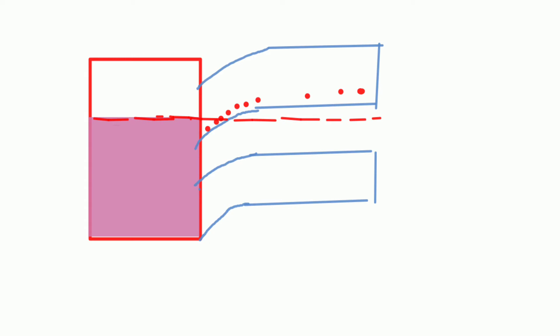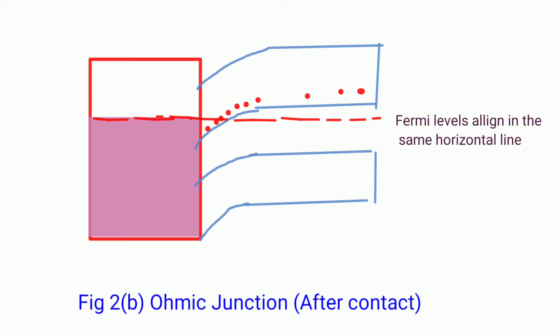Thus we have seen that at equilibrium electrons move from the metal to the empty states in the conduction band so that there is an accumulation region near the interface on the semiconductor side. The accumulation region has a higher conductivity than bulk of the semiconductor due to the higher concentration of electrons.